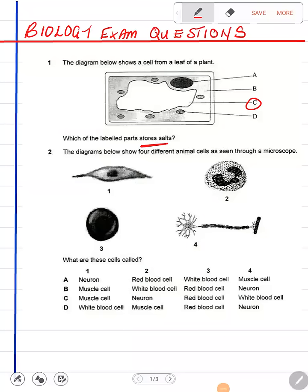Then question 2 says the diagrams below show four different animal cells as seen through a microscope. So these cells, they appear like this only after being seen under a microscope. What are these cells called? So what you are doing here is just identification of specialized cells.